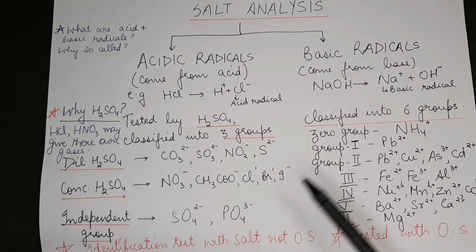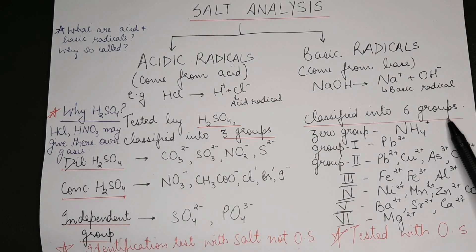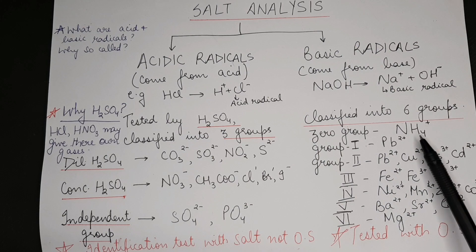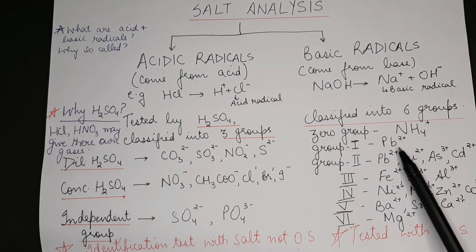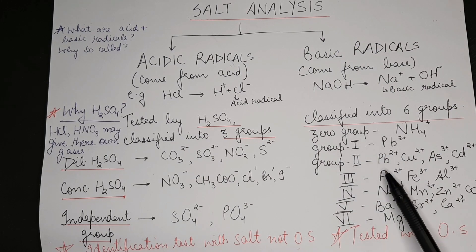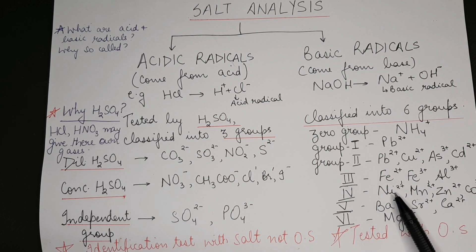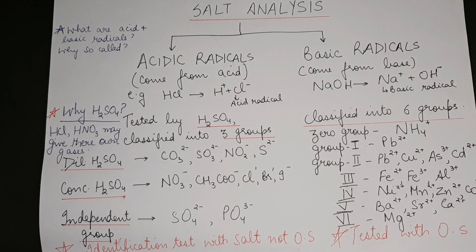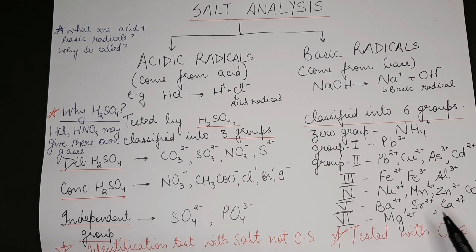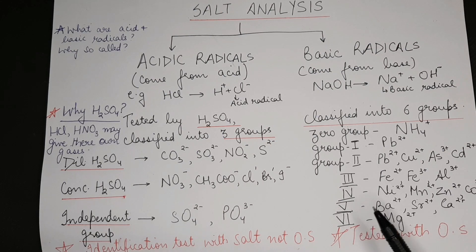The basic radicals are classified into six groups. Zero group is ammonium ion. Group one is mainly lead ion. Group two is again lead ion, copper ion, arsenic ion, and cadmium ion. Group three is ferrous, ferric, aluminum. Group four: nickel ion, manganese, zinc ion, and cobalt ion. Group five is barium, strontium, calcium. Group six is magnesium ion.